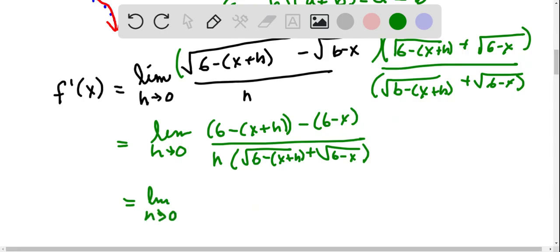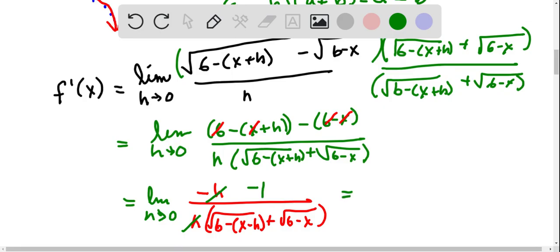Okay, so on the top we have six minus six, so those are gone. Negative x minus minus x, so those are gone. And you're left with minus h over h times square root of six minus x plus h plus square root of six minus x. And now you can cancel the h's, which will leave us a minus one on top. Now take the limit, plug in h equals zero, and you end up with minus one over two square roots of six minus x. Alright, so that's the derivative.